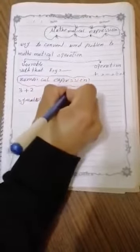Numerical Expression is a statement containing numbers and operations. Numbers such as 3 plus 2, 45 divided by 9, 6 times 2, and so on.